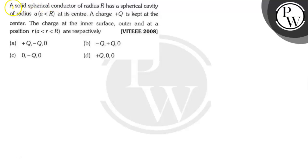Hello, let's read the question. The question says here: A solid spherical conductor of radius R has a spherical cavity of radius A (A less than R) at its center.